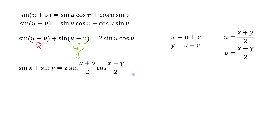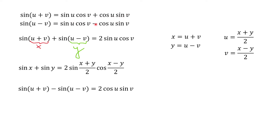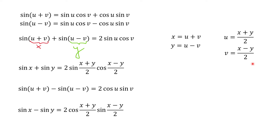Next, instead of adding those two formulas, we subtract them. The first term in both formulas is the same so it cancels out, and the second terms have opposite signs, so when we subtract they add up. Again setting u + v = x and u − v = y and using the same expressions for u and v, we get the formula for the difference of sines.